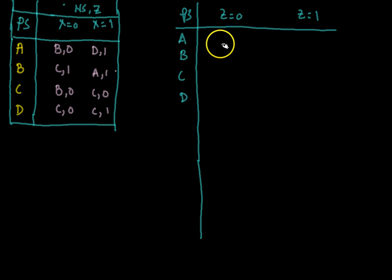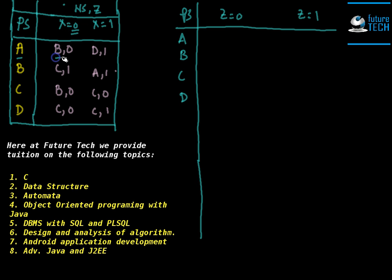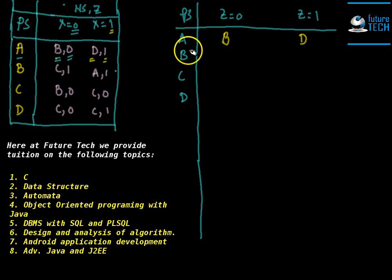For the column z=0, we find which state transitions produce output 0. For state a, when input is 0, it goes to b and produces output 0, so state b appears in the z=0 column for a. For input 1, state a goes to d and produces output 1, so state d appears in the z=1 column for a.